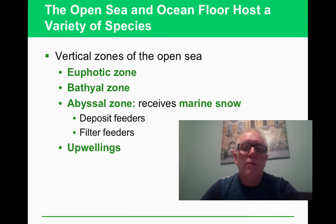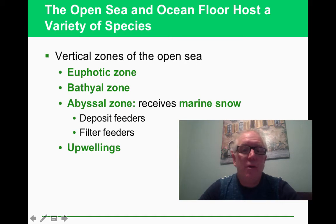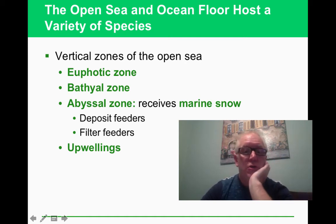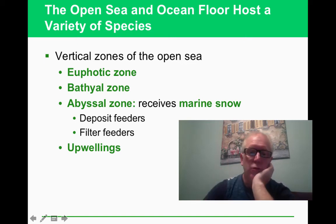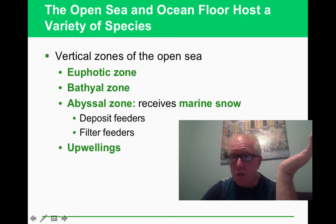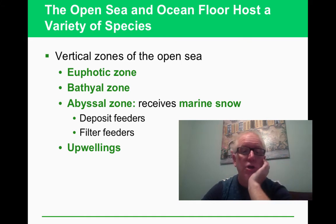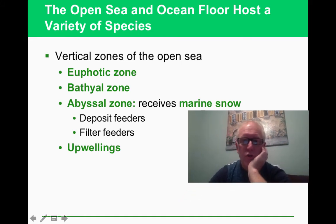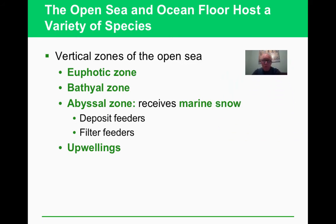We can talk about the different species found in the different ocean zones — this has been covered in the slides. Marine snow brings nutrients down; currents take them to other places; and upwellings bring them back up to the surface. We've discussed oceanic currents and upwellings in another chapter.